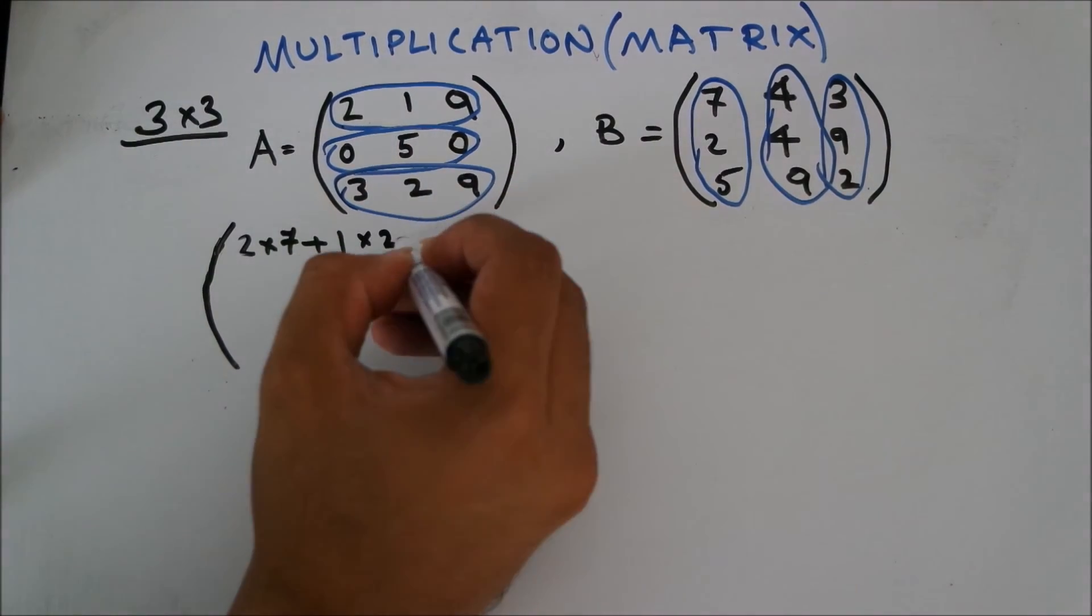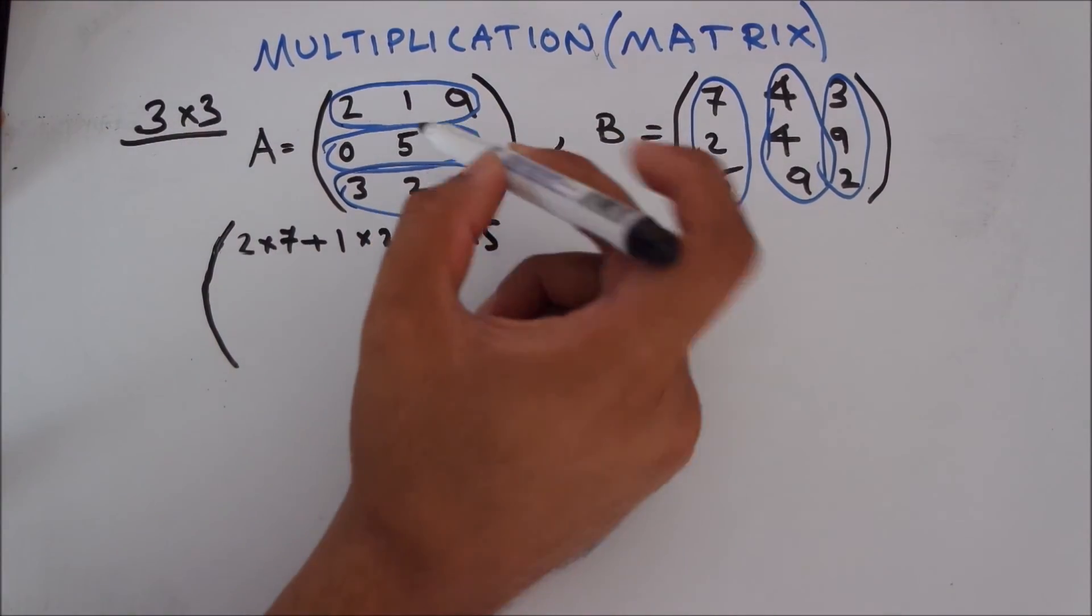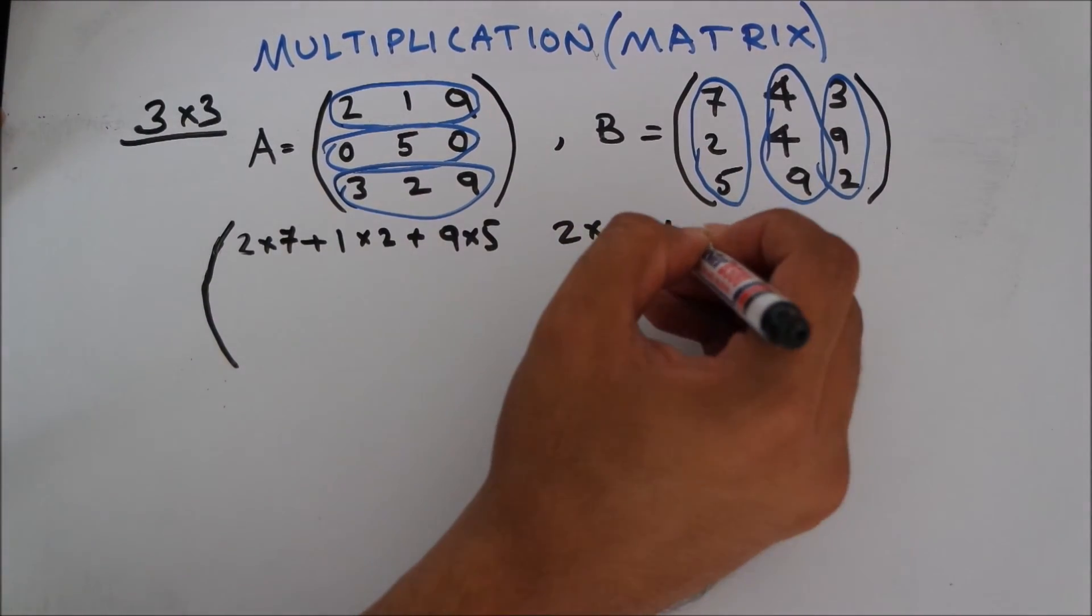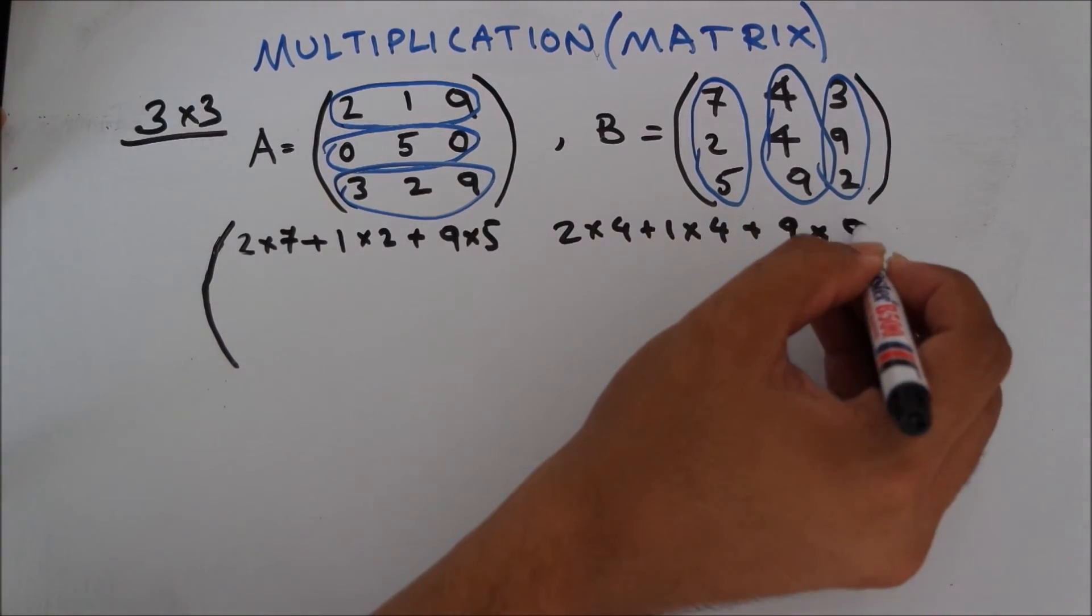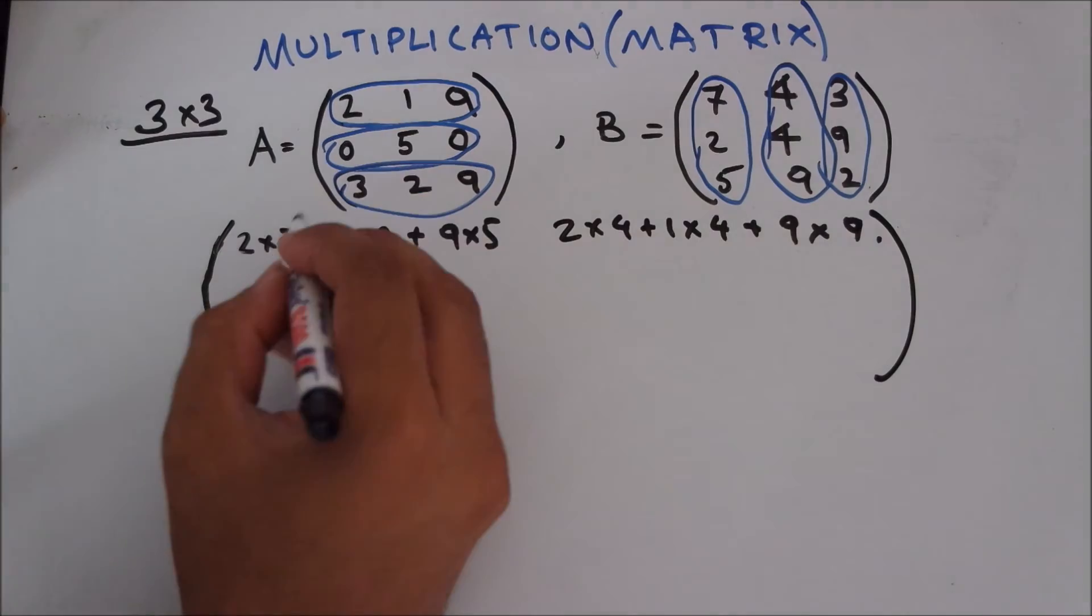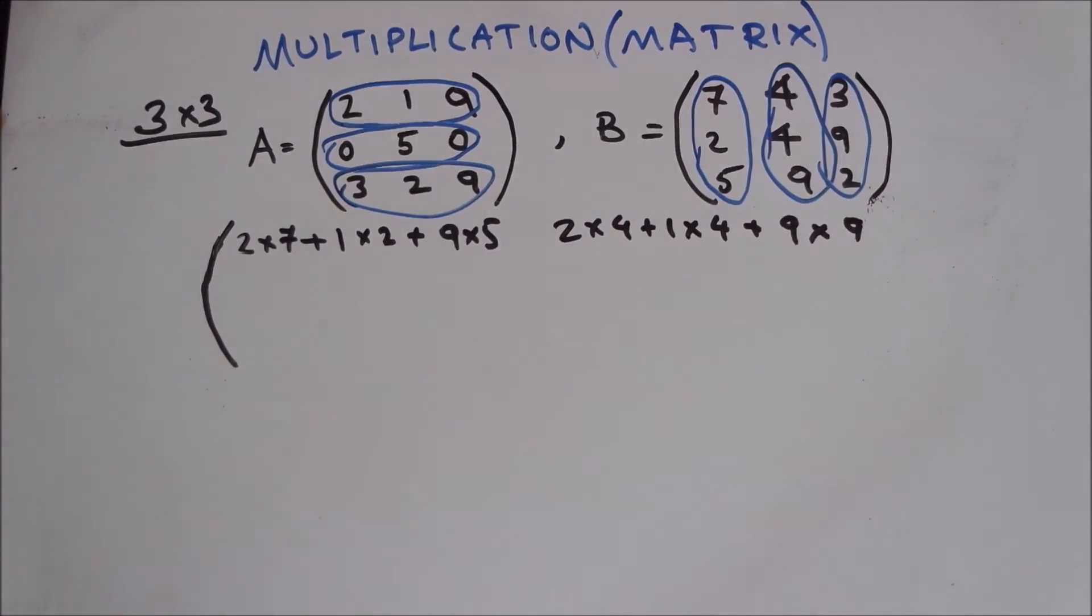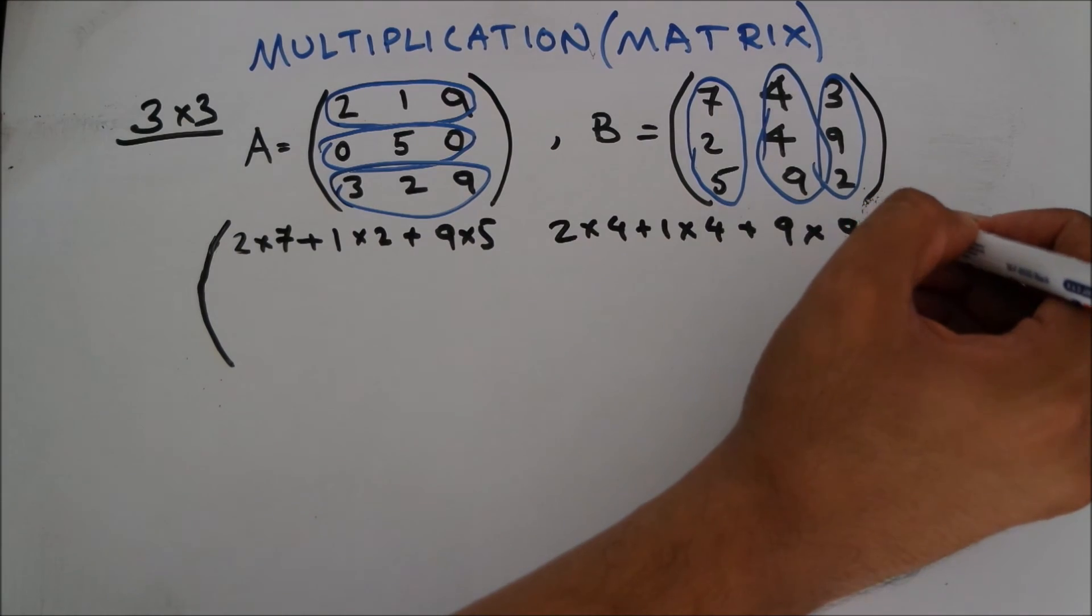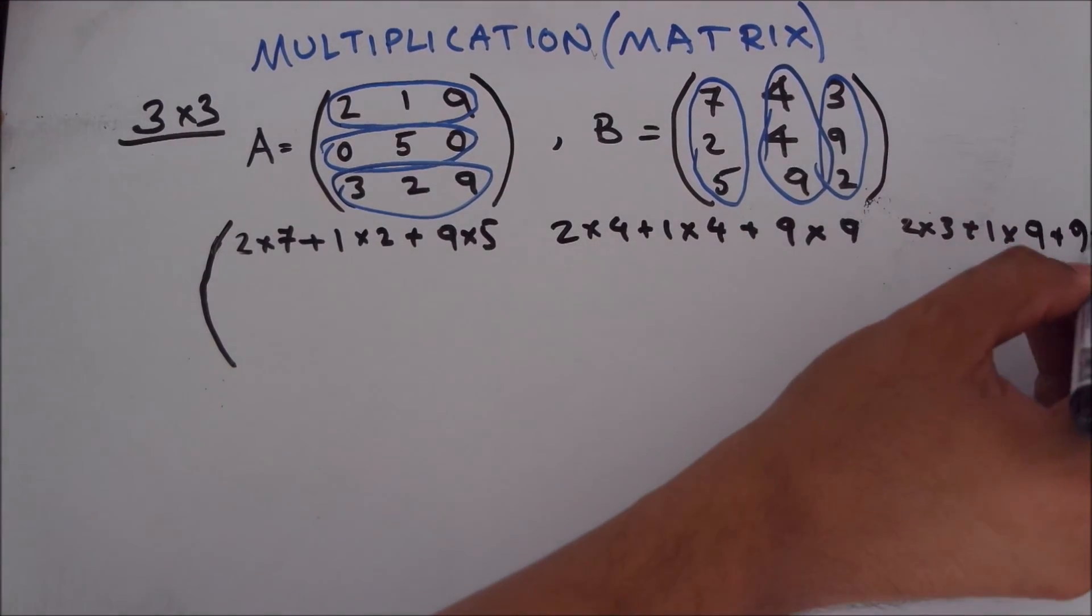Let's see how it looks like. 2 into 7 plus, remember to put the plus sign always during multiplication, 1 into 2 plus 9 into 5. For the second column, 2 into 4 plus 1 into 4 plus 9 into 9. For the third column, would be 2 into 3 plus 1 into 9 plus 9 into 2.